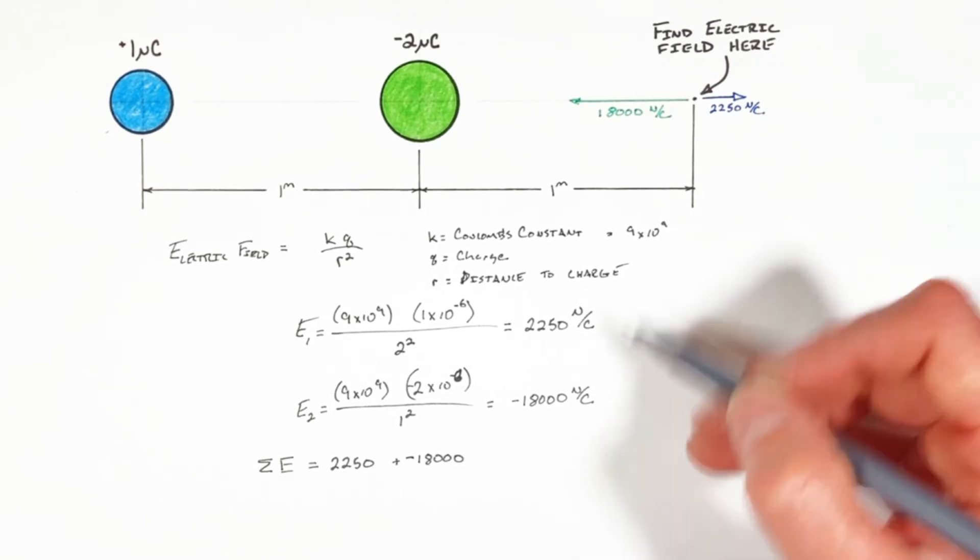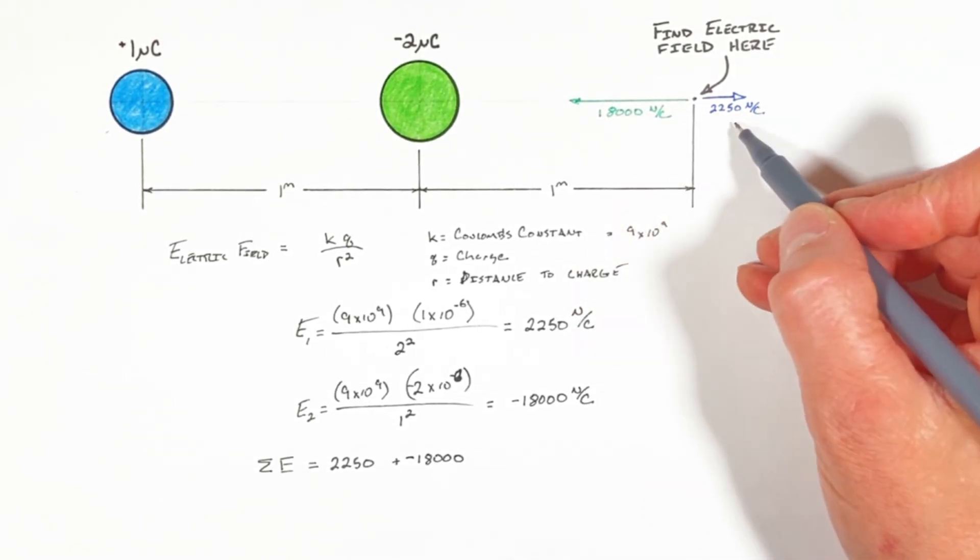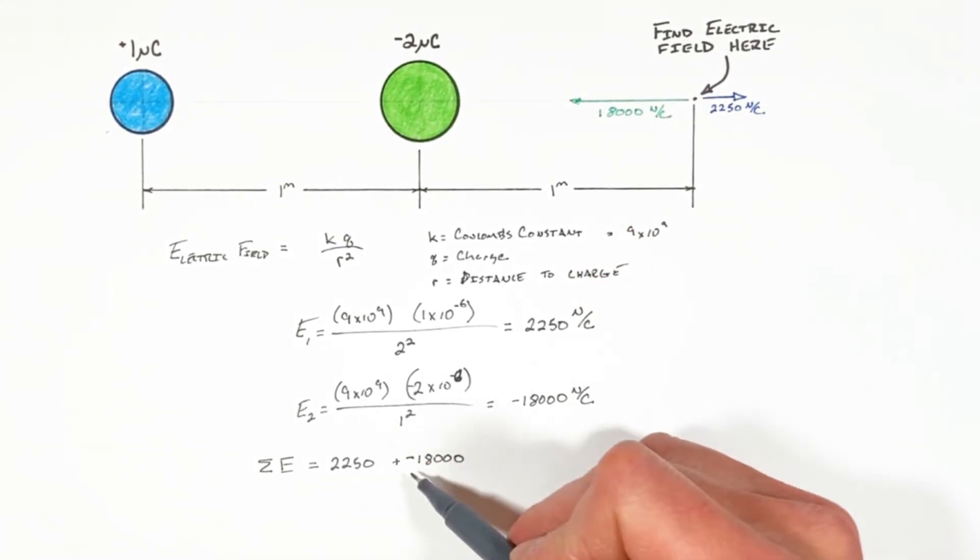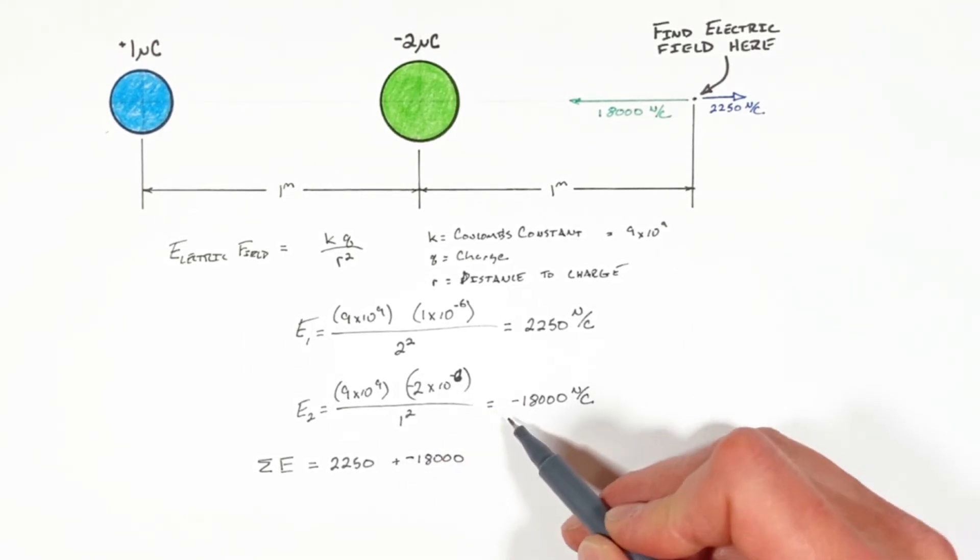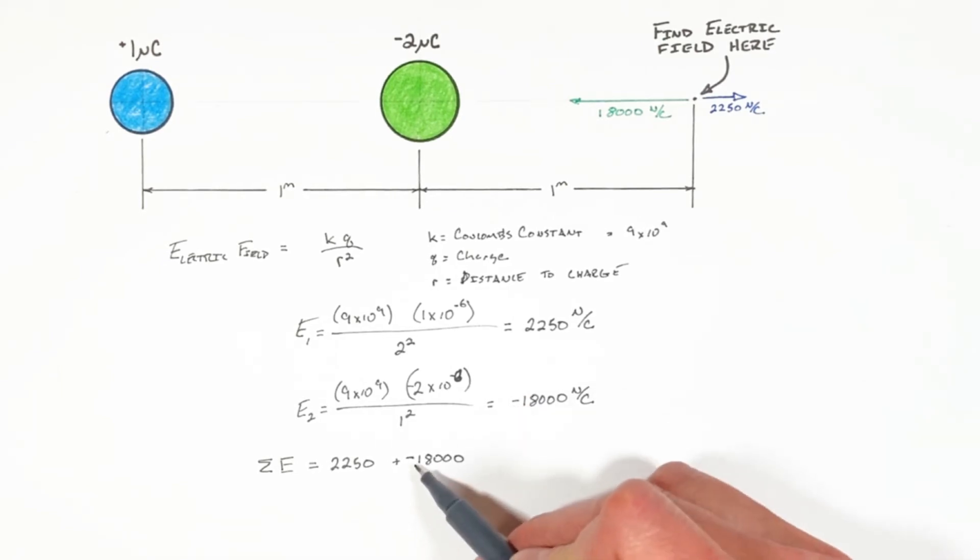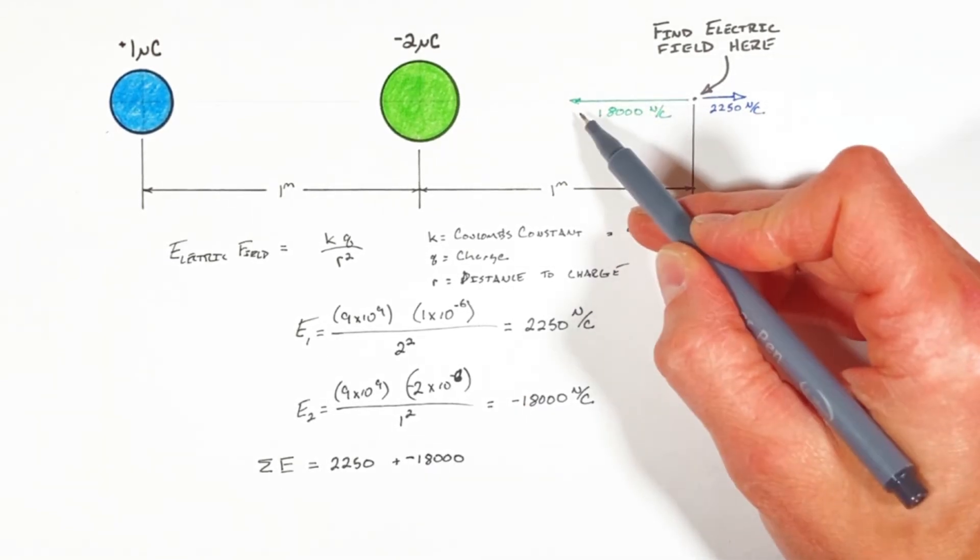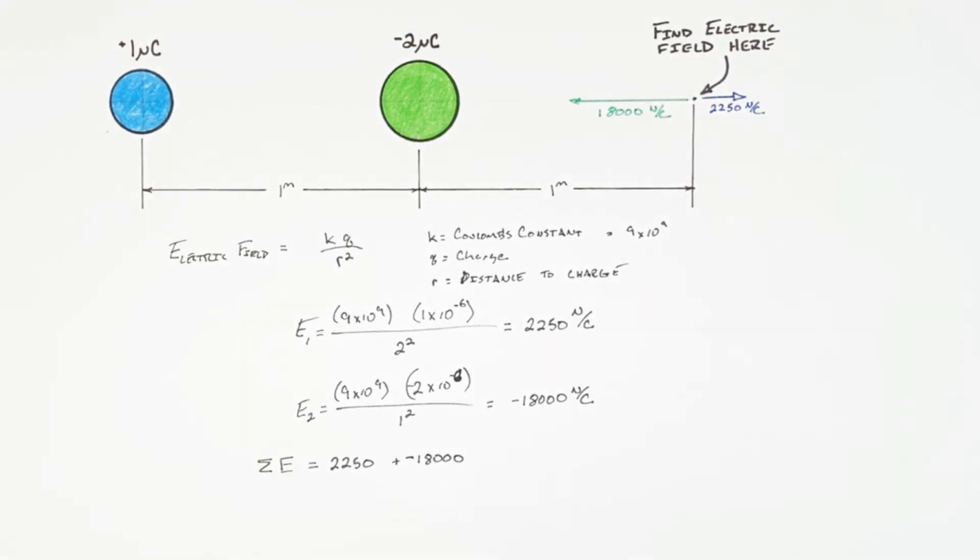Only to a minute later wind up putting the negative back in here. Realize this negative really doesn't have anything to do with the fact that this value right here came out negative. This negative is because these 18,000 newtons per coulomb were acting to the left. So putting these two values together, this is going to give us...